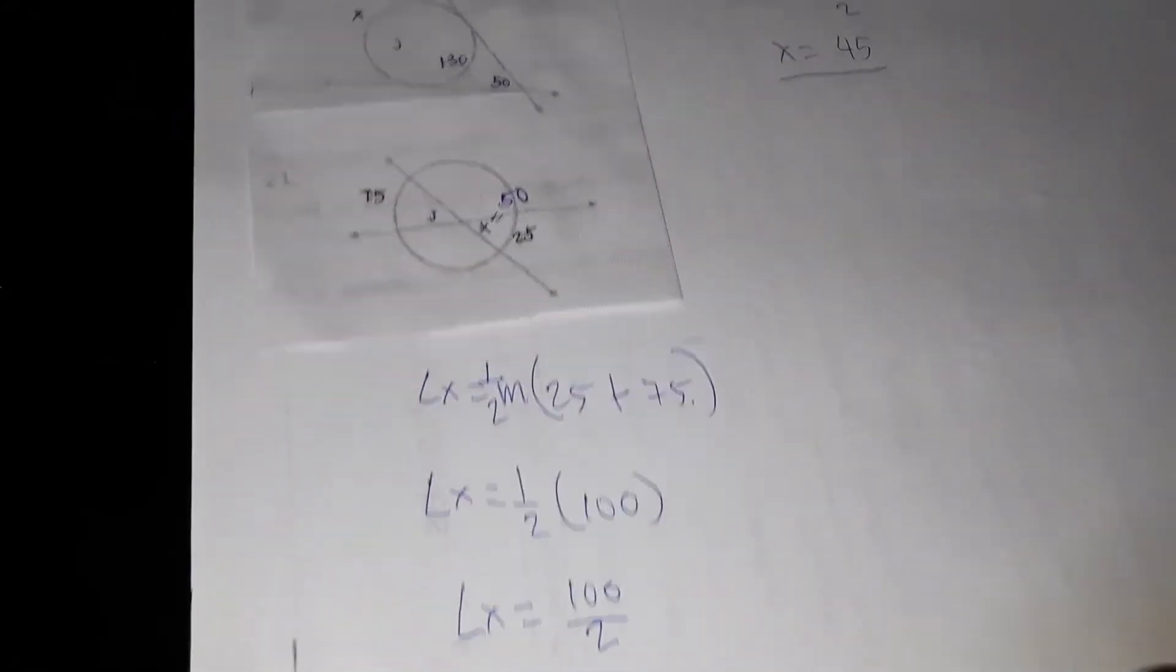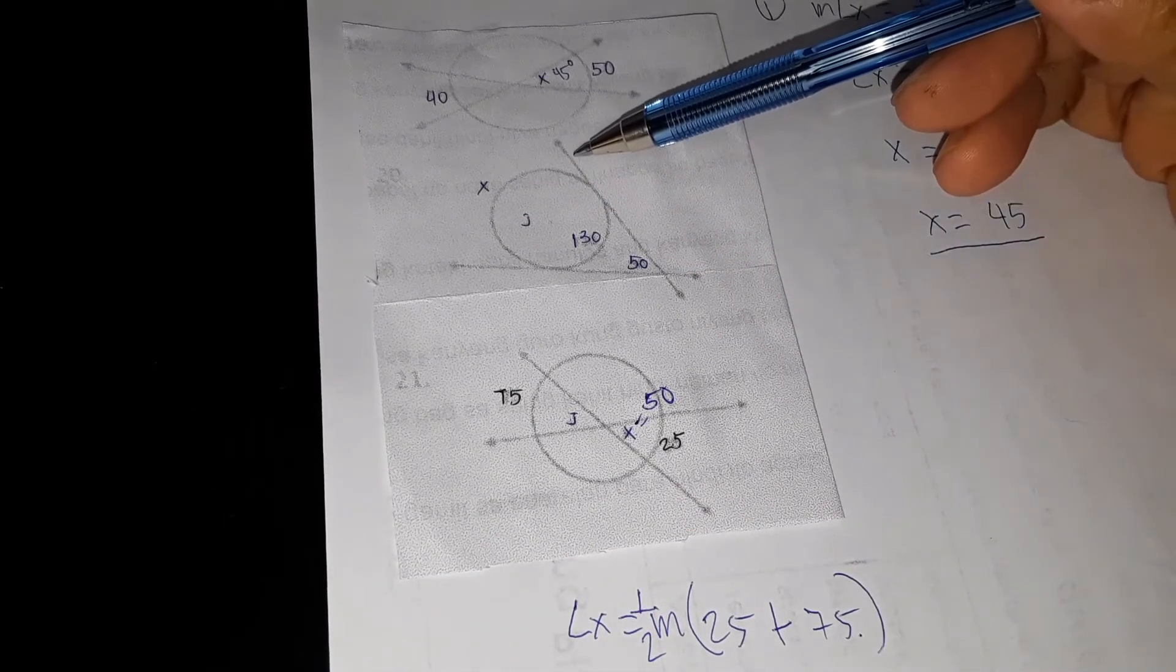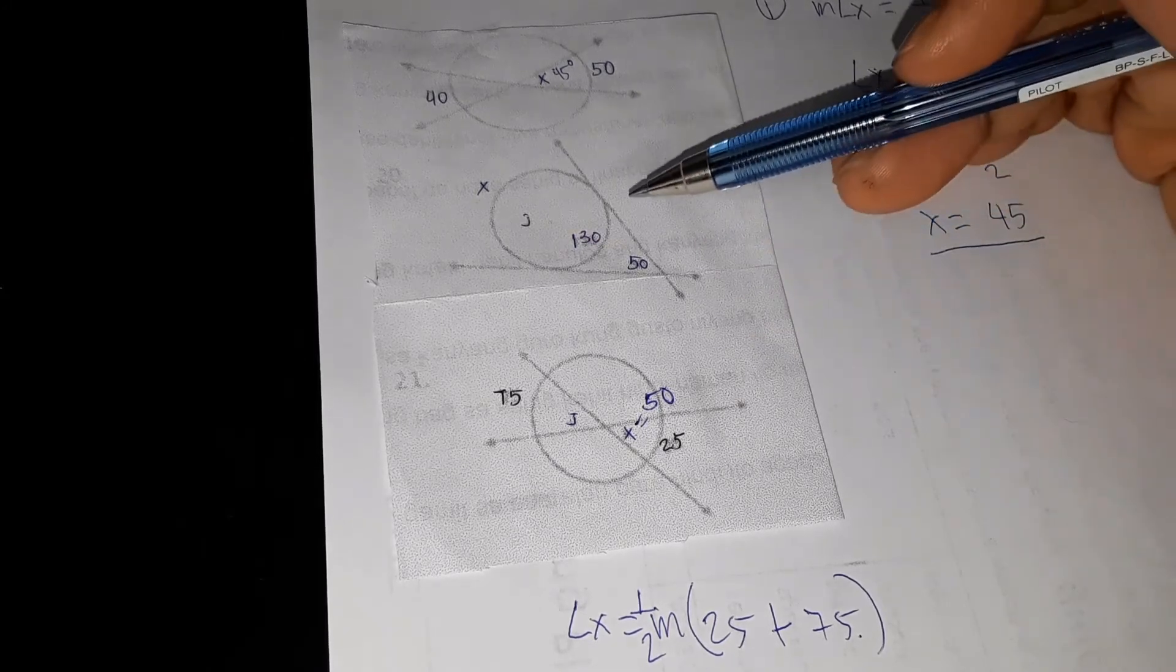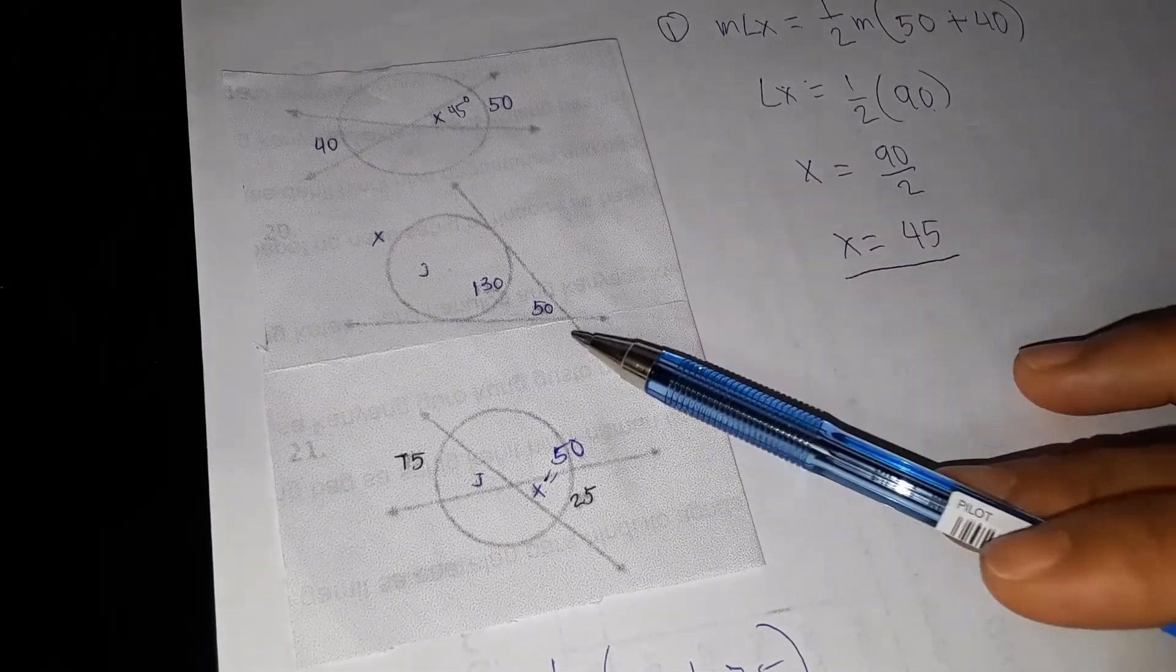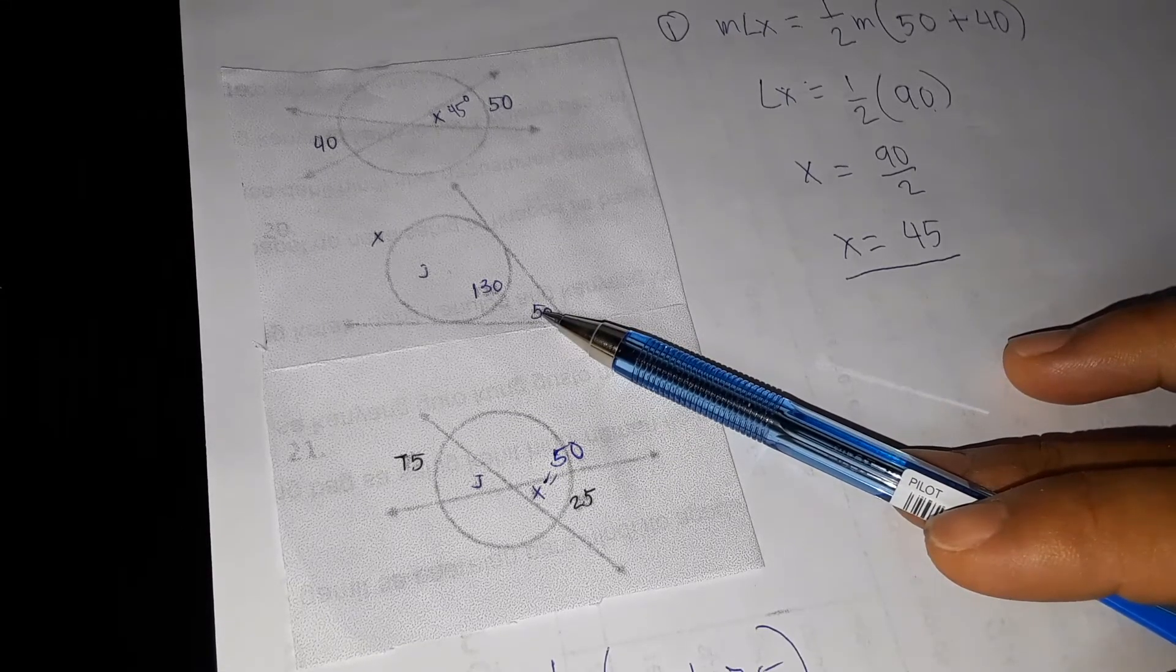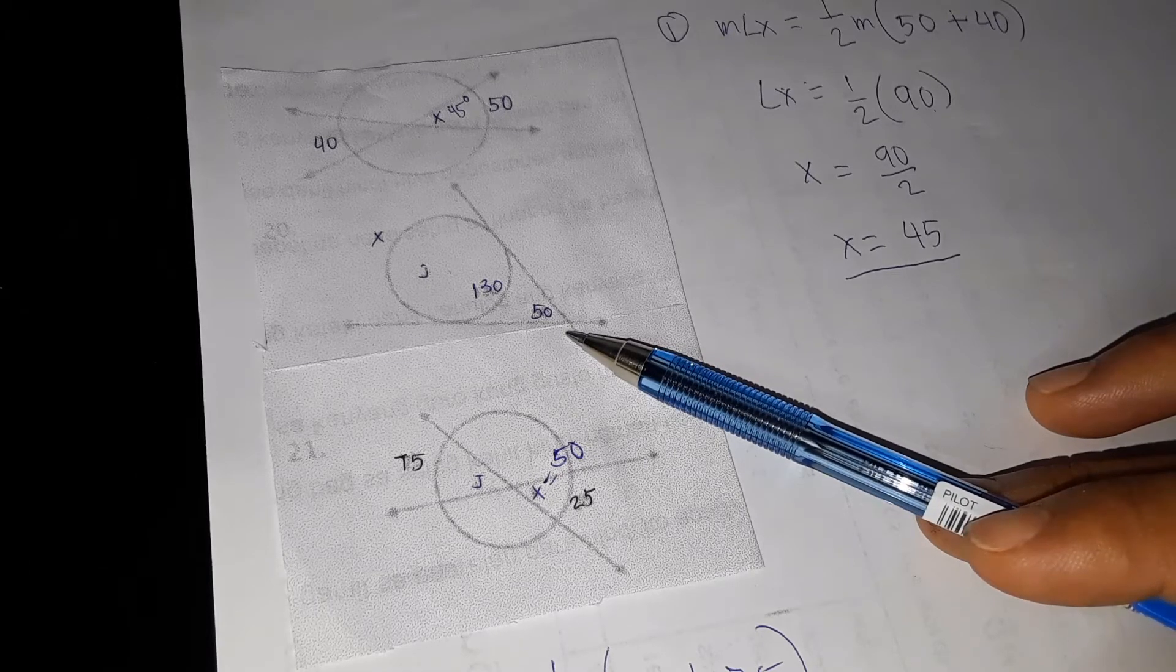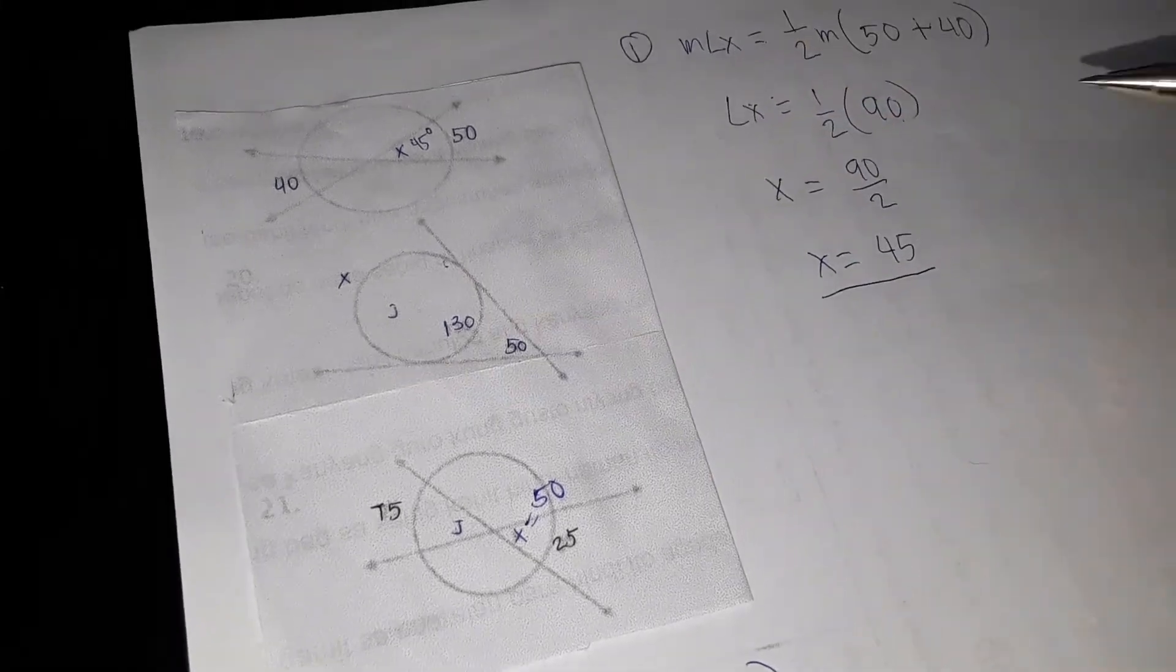Next, how about our example number 2? In our example number 2, if you notice, it is the example of tangent. So if two tangent intersect in a circle, the measure of an angle formed by two secants or two tangent intersecting outside a circle equals one half the difference of the measure of their intercepted arc. So the difference between X and 130.